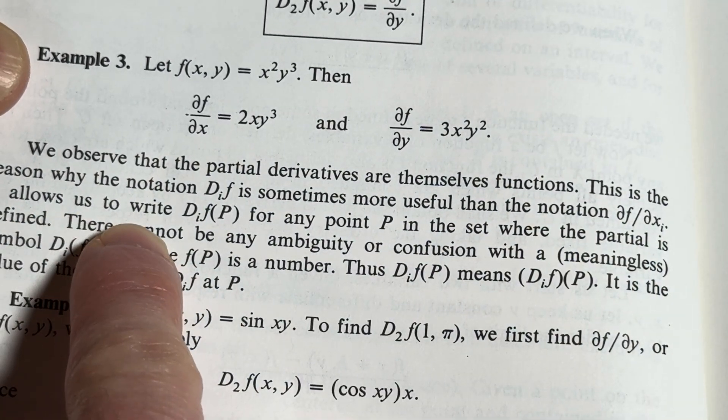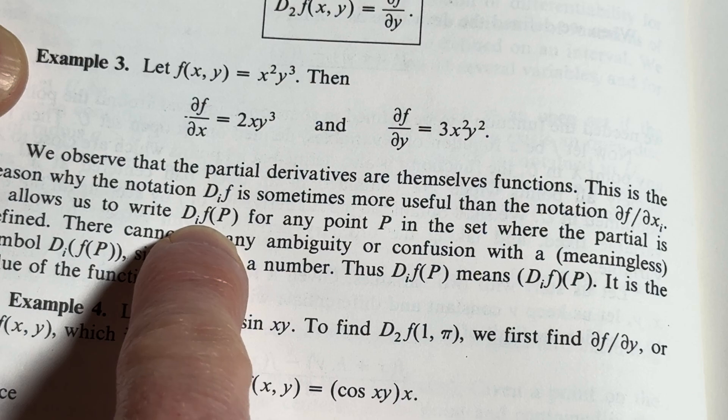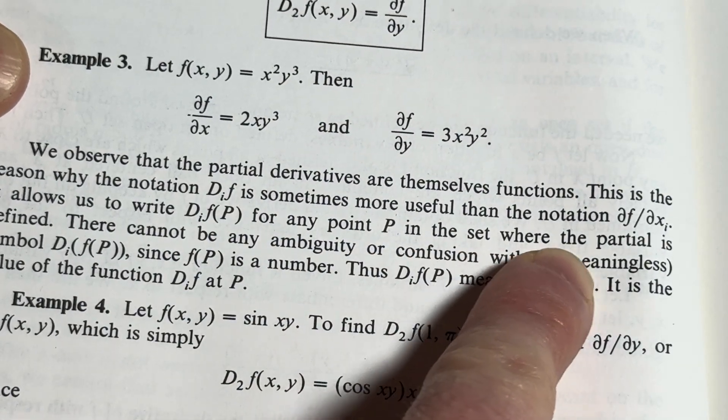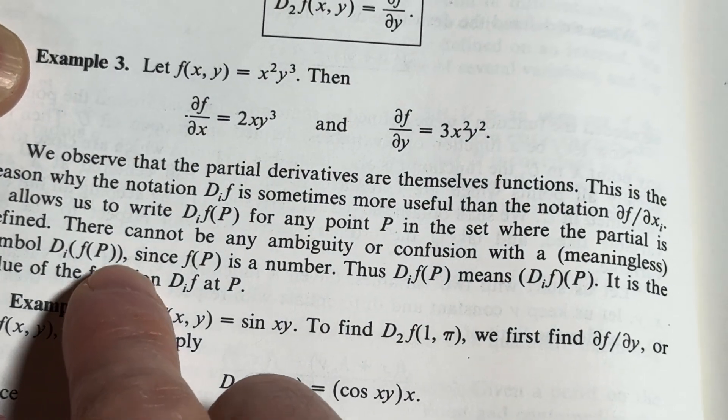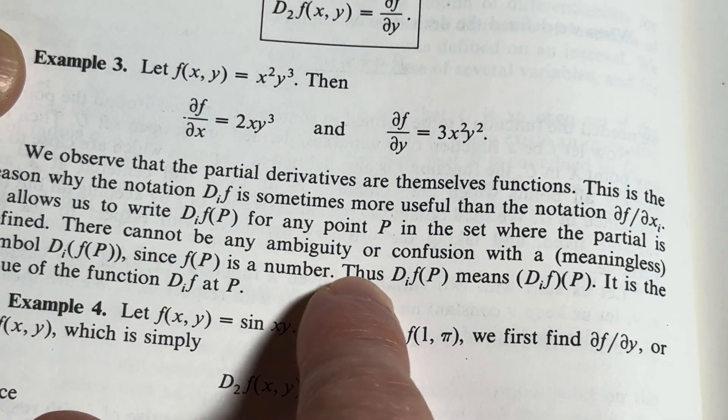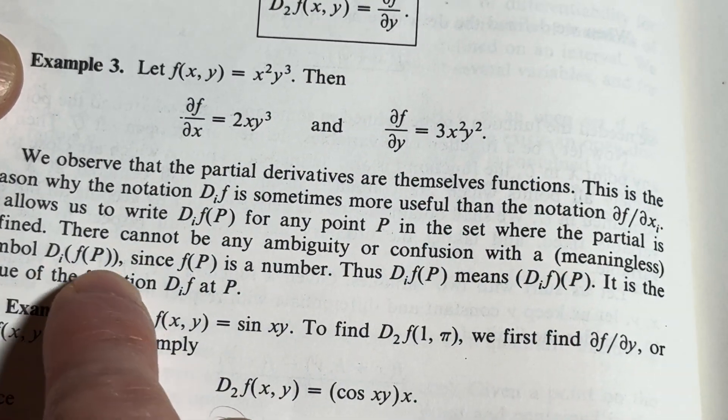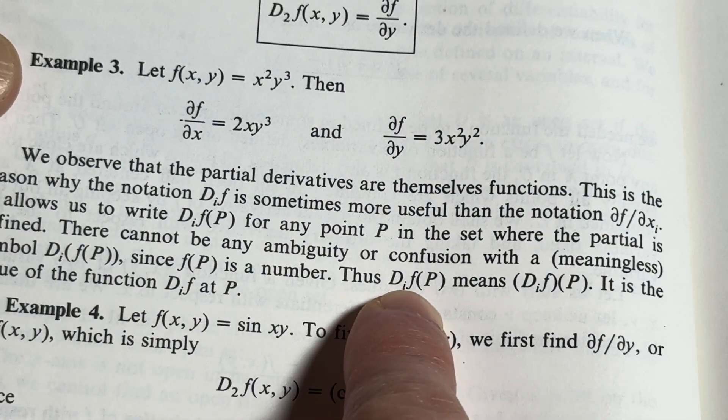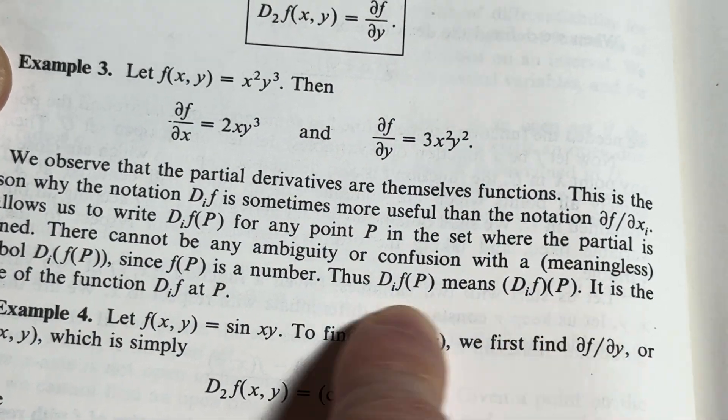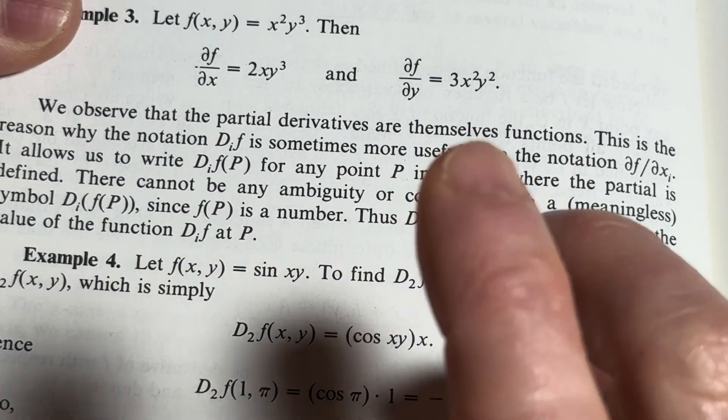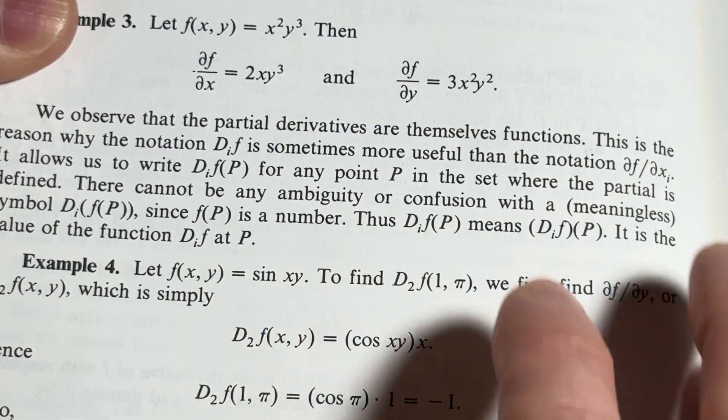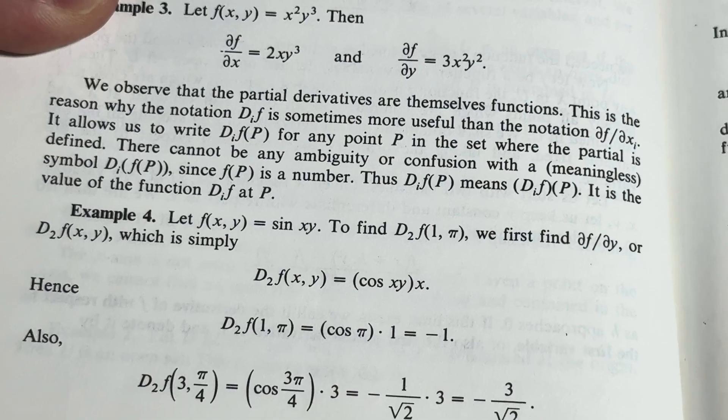this del f del x sub i. It allows us to write this here for any point p in this set where the partial is defined, right? It allows you to specify the point. There cannot be any ambiguity or confusion with a meaningless symbol since f of p is a number. Thus d sub i of p means this. It is the value of the function. It's really, really, really emphasizing that, right? He's really making a big deal about the notation.